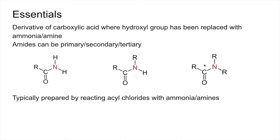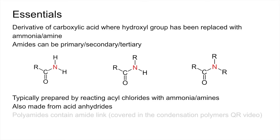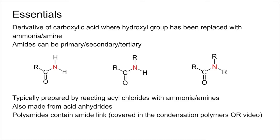Amides are typically prepared by reacting acyl chlorides with ammonia or amines — I'll spend a bit of time looking at that in a moment. You can also make them from acid anhydrides; I've got an example of that as well. Polyamides obviously contain the amide link, but I covered that in the condensation polymers quick revision video, so I'm not going to look at polyamides in this one.